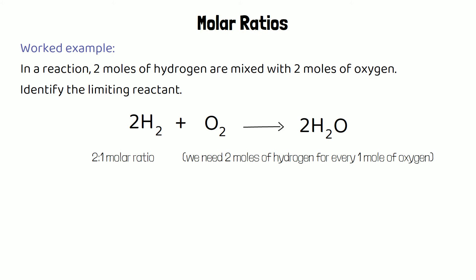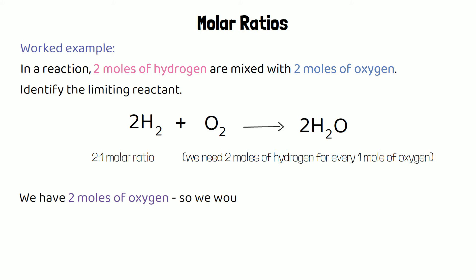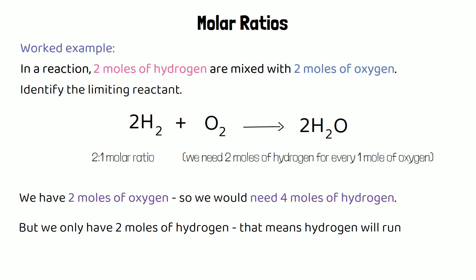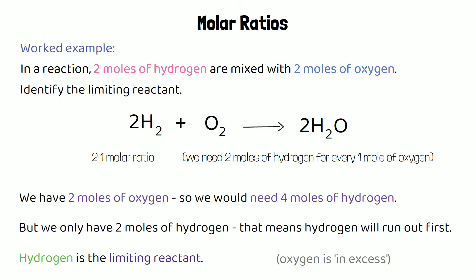We need two moles of hydrogen for every one mole of oxygen. The question tells us we have two moles of hydrogen and two moles of oxygen. If we have two moles of oxygen, we would need four moles of hydrogen — but we only have two. So hydrogen will run out first, making hydrogen the limiting reactant, and oxygen is in excess.